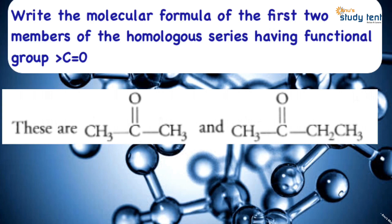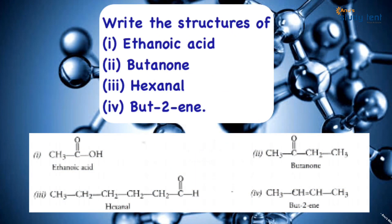Now let's look at the structures and explain their names. First, ethanoic acid. Next, butanone — the root word 'butan' means 4 carbon atoms, and the suffix 'one' indicates the ketone group, which is the C=O group.